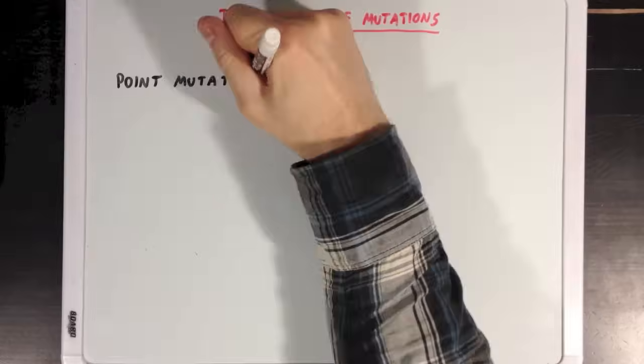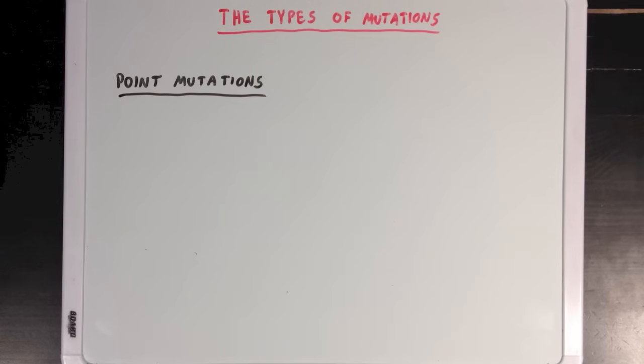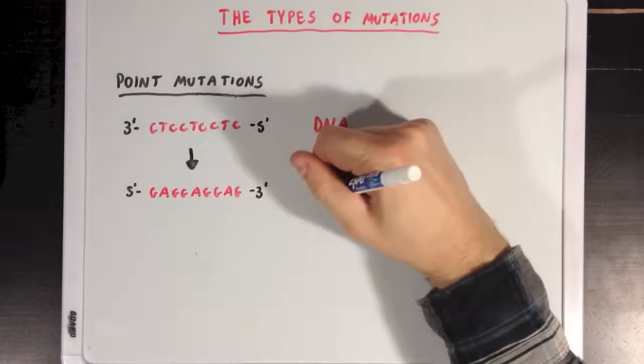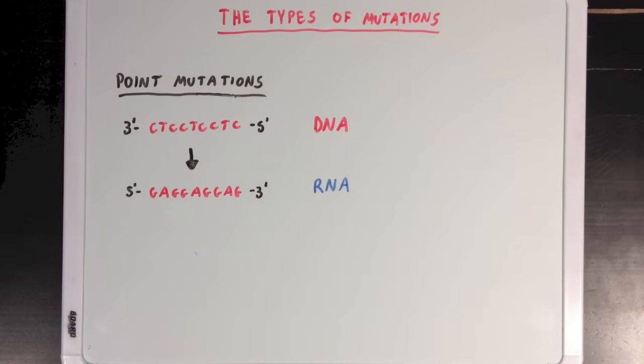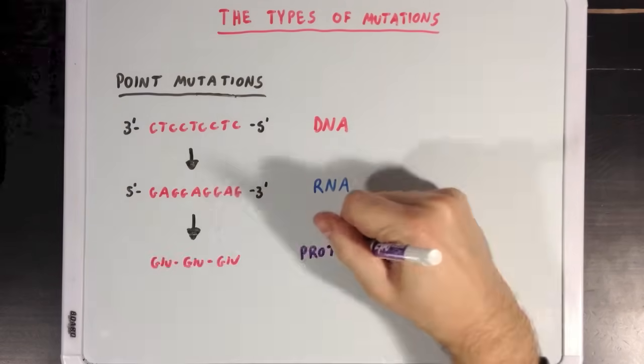Well, the first type of mutations we're going to talk about are called point mutations. Now, here I've just written out a random sequence of DNA, which is just a repeating pattern of CTC, which would code for a repeating sequence of GAG in the RNA strand, and finally a protein sequence of three glutamate amino acids.